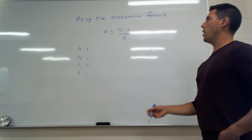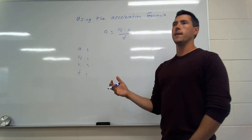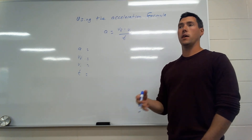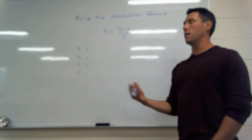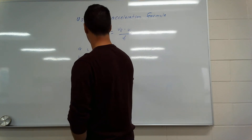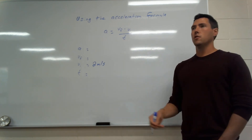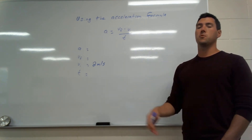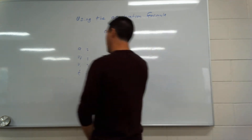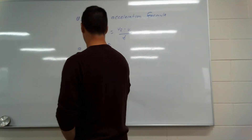Now a problem where we need algebra to find time. A skier starts at a velocity initial of 2 meters per second — a nice easy bunny-slope speed. The acceleration is 3 meters per second squared, meaning they speed up by 3 meters per second every second.